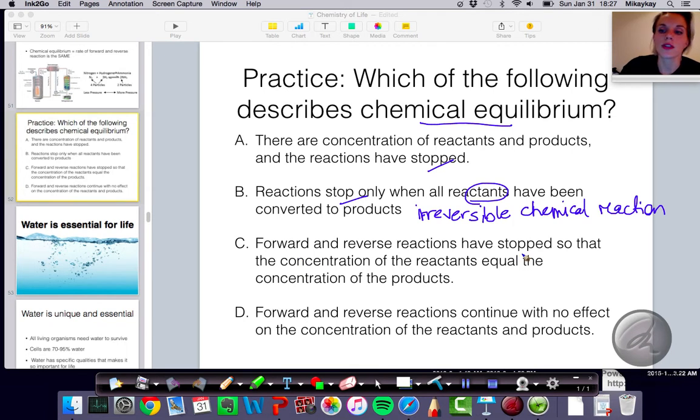C, forward and reverse reactions have stopped so that the concentrations of the reactants equal the concentration of products. Again, that's not what we're talking about here. We're not talking about a stopped reaction. D, the forward and the reverse reactions continue with no effect on the concentration of the reactants and the products. And so that is referring to this idea that the forward and the reverse rate are happening at the same, and you are making as much of the reactants as you are getting rid of the products. And so your answer there is D.